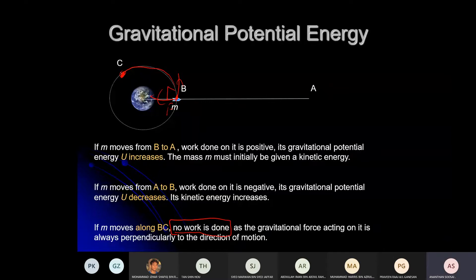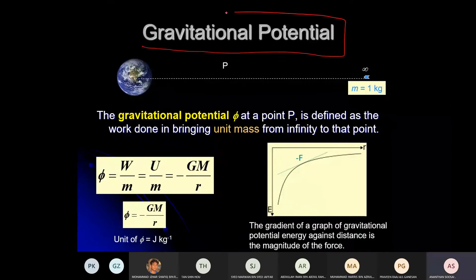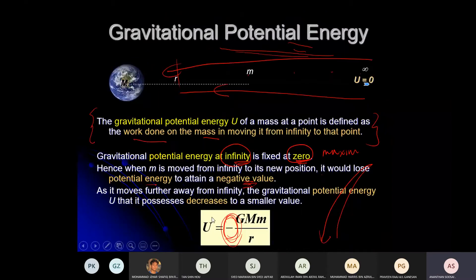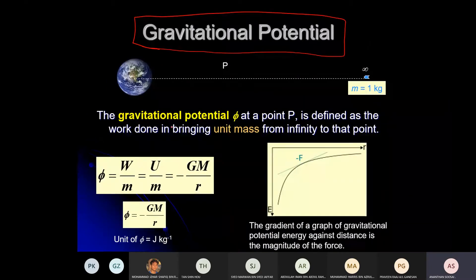Any questions? Let's continue. Now we have another term: gravitational potential. What is the difference between gravitational potential energy and gravitational potential? Gravitational potential energy — going back — is negative GMm/r, with units of joules. Gravitational potential is a different concept.